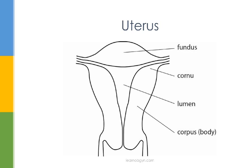Now let's talk about the uterus. The uterus lies behind the bladder and in front of the rectum. The four parts of the uterus include the corpus, which is the body of the uterus; the cornua, which are the corners where the fallopian tubes connect to the uterus; and the fundus, which is the uppermost region of the uterus. The uterus is made of two types of tissue: the outer myometrium, which is smooth muscle, and the endometrium, which is a mucosal layer made of columnar epithelium.